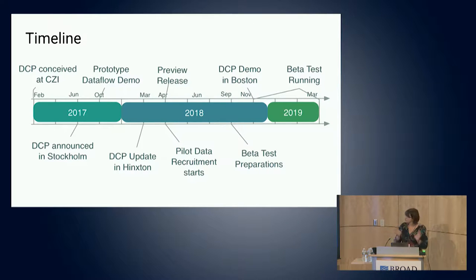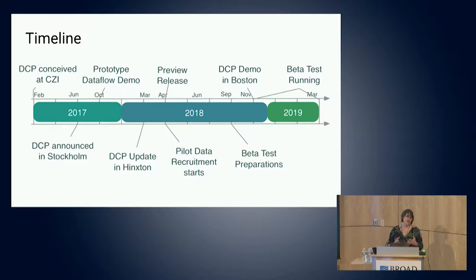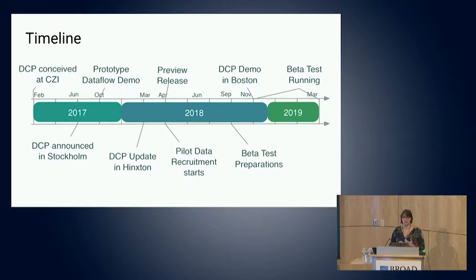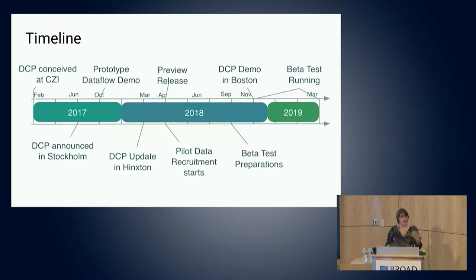Over the course of the last 18 months - we're not quite as old as the DCP itself - a lot has happened. A lot has happened just since March when we spoke to you in Hingston and gave you insight into what we were doing already. Since March, we've had the preview release with great data sets from Aviv's lab, Sarah's lab, and Kirsten's lab for people to start playing around with and see what might be possible. We started pilot data recruitment, and of course, building the system.